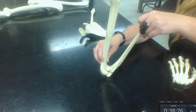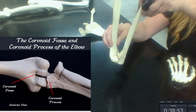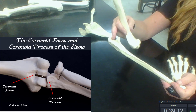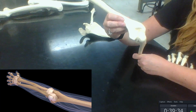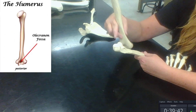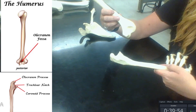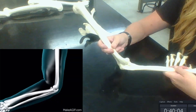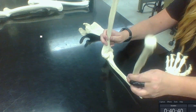When you bend your elbow as far as possible, the coronoid process of the ulna tucks into the coronoid fossa of the humerus. The trochlear notch rocks back and forth across the trochlea. Looking at the back of the elbow, the olecranon process of the ulna articulates with the olecranon fossa on the humerus, preventing the elbow from bending backwards.